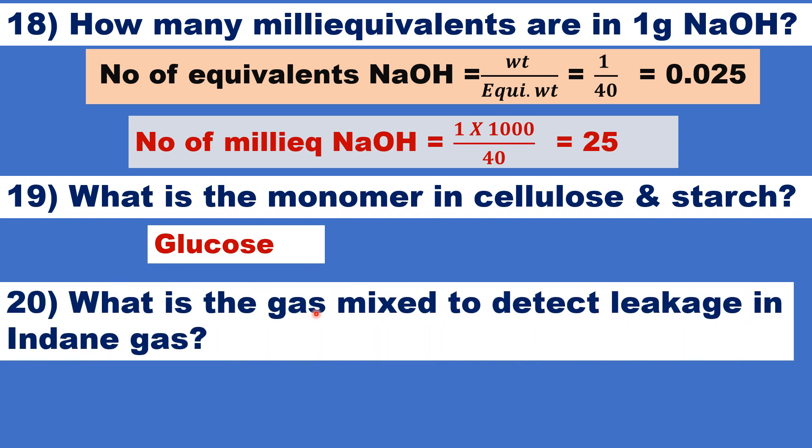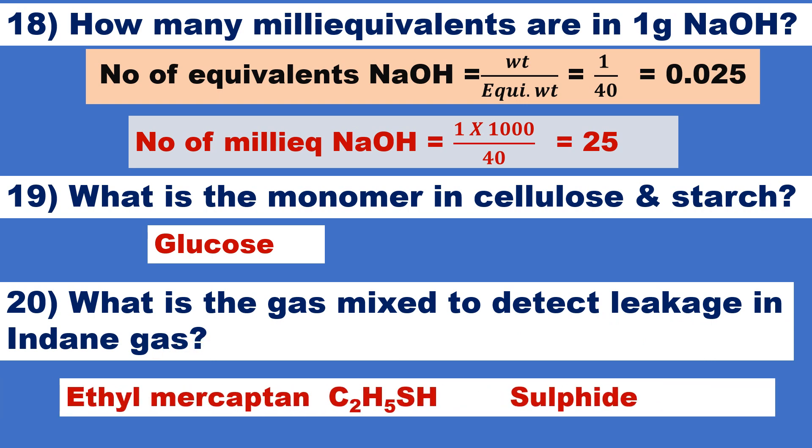What is the gas mixed, a small amount of gas mixed to detect leakage in LPG gas? Ethyl mercaptan, which gives rotten smell. So, it is a sulfide type of compound, it gives rotten smell. So, it can be easily detected if it is leaking.